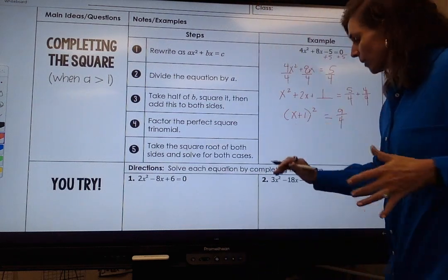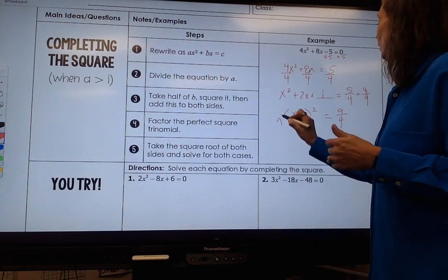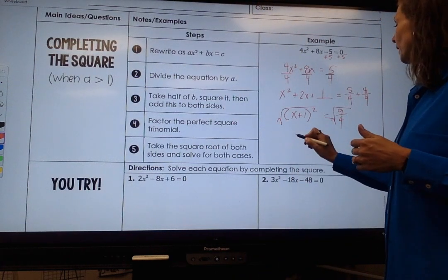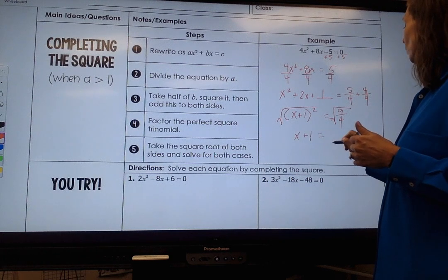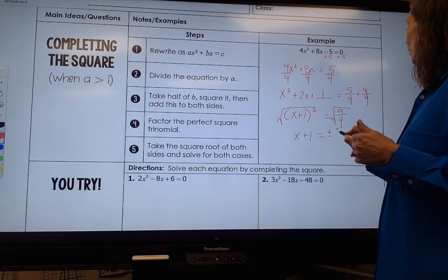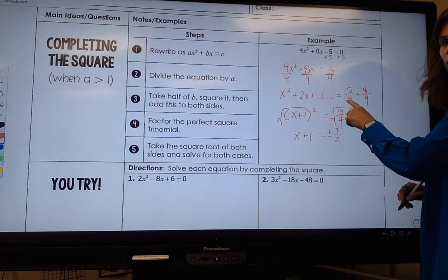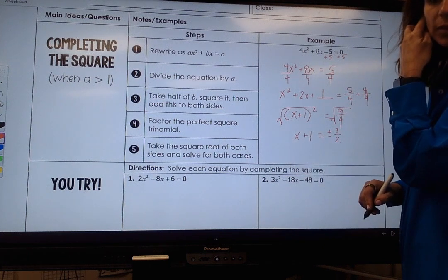And now we do the same thing as we have been doing. We take the square root of both sides and I get x plus 1 equals plus or minus 3 over 2. Remember here I take the square root of the numerator and square root of the denominator.